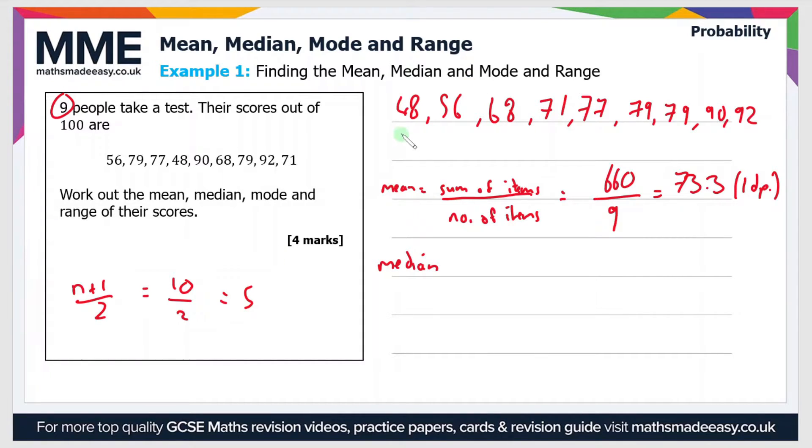So if we count 5 along our list of test scores then we have 1, 2, 3, 4, 5 so the median is 77.